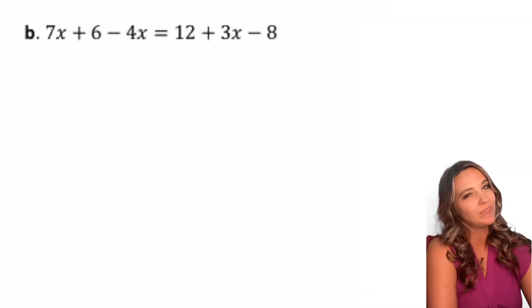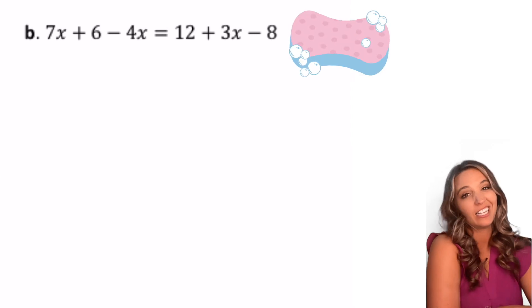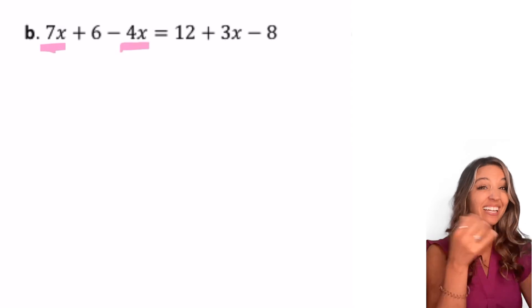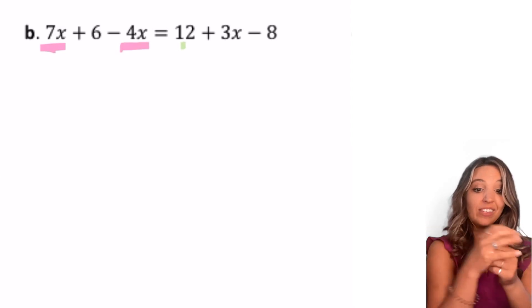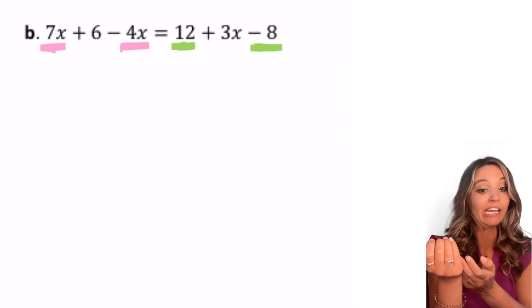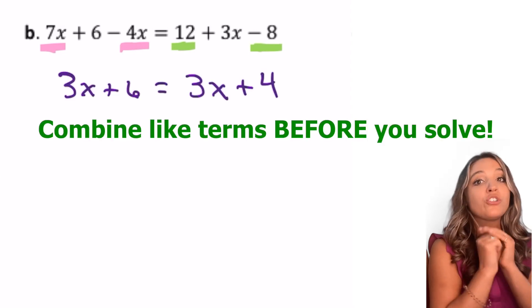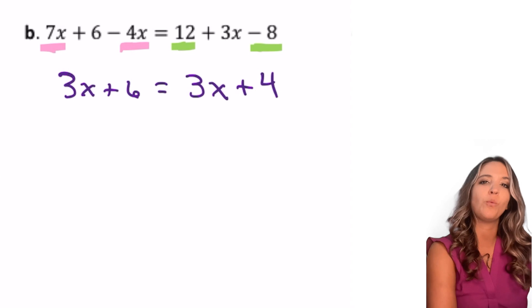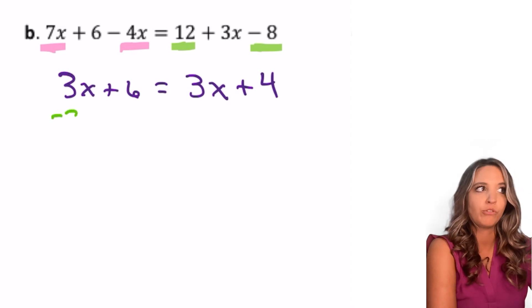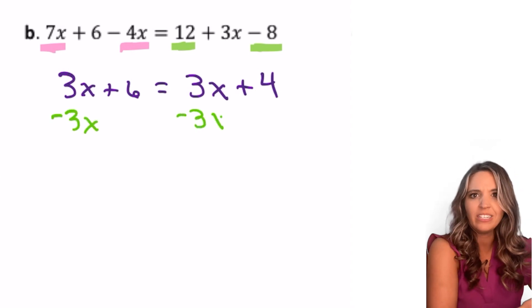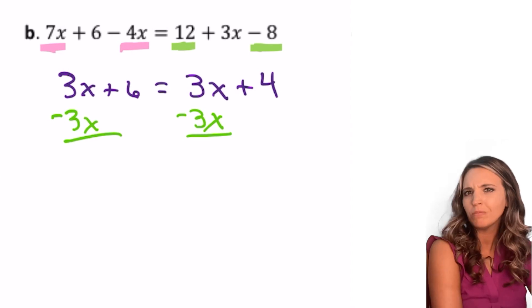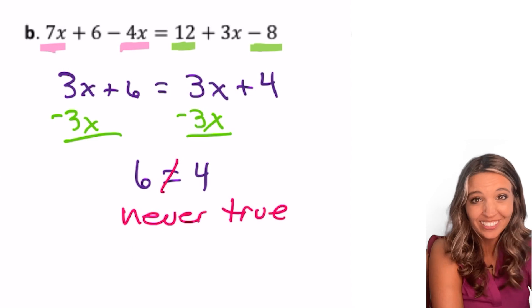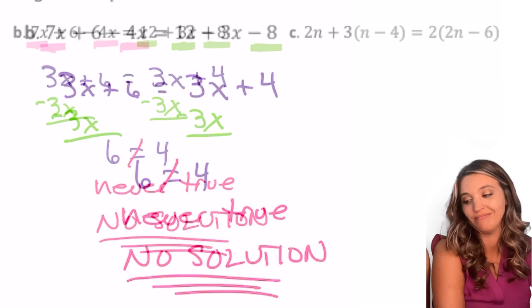Next example. I think you probably have this one. Clean it up first. No distribution, but I do have some like terms. Seven x minus four x, that's three x. And then on the right side of the equal sign, I have 12 minus eight. That's four. So important to combine like terms before we start solving. Move my x's to one side. What happens? Three x minus three x. That's zero, right? So six equals four. Well, that's never true. So no solution.